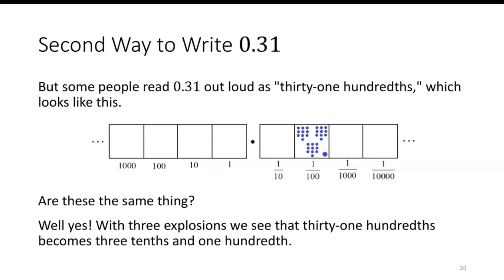So are these the same thing? And the answer is yes. If you recall your 1←10 machines, every time you have ten dots, kablooey, you have one dot to the left. You take ten dots, kapow, one dot to the left. And then take ten dots, kapang, one dot to the left. So you can see, having thirty-one dots in the one-hundredths place is the same as having three dots in the tenths and one dot in the hundredth.